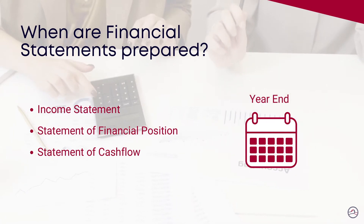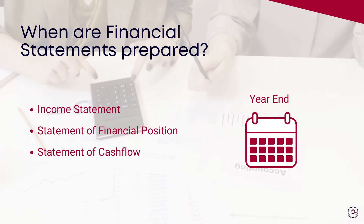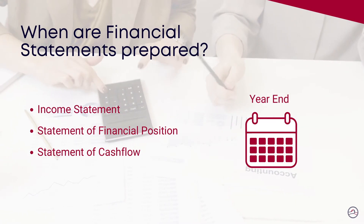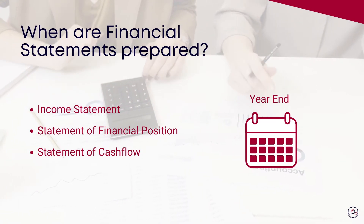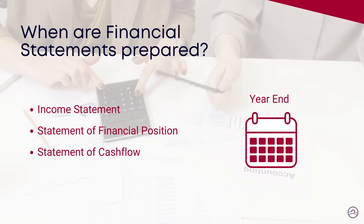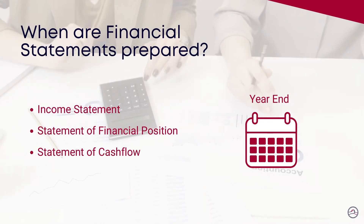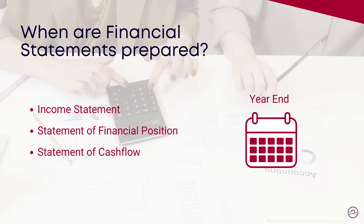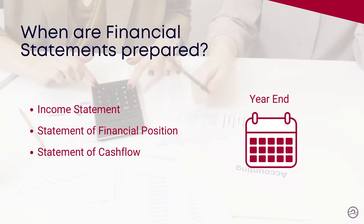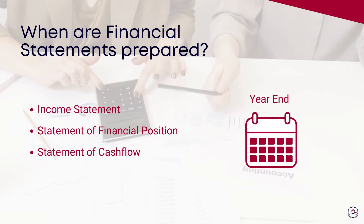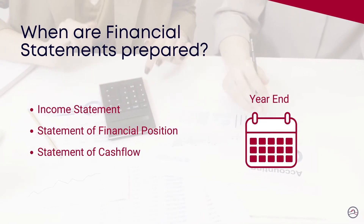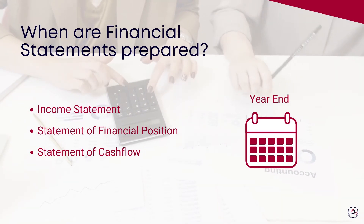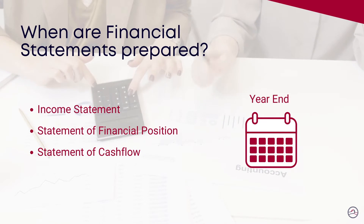We call this annual period a fiscal year. The statements of income and cash flows provide insights about an organization's business for the entire year, while the statement of financial position provides a snapshot at a given time, usually the end of the year.